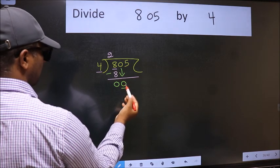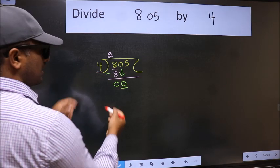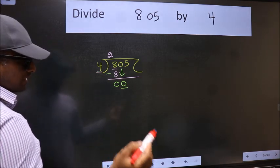Now here we have 0 and here 4. 0 is smaller than 4. So we should bring down the second number.